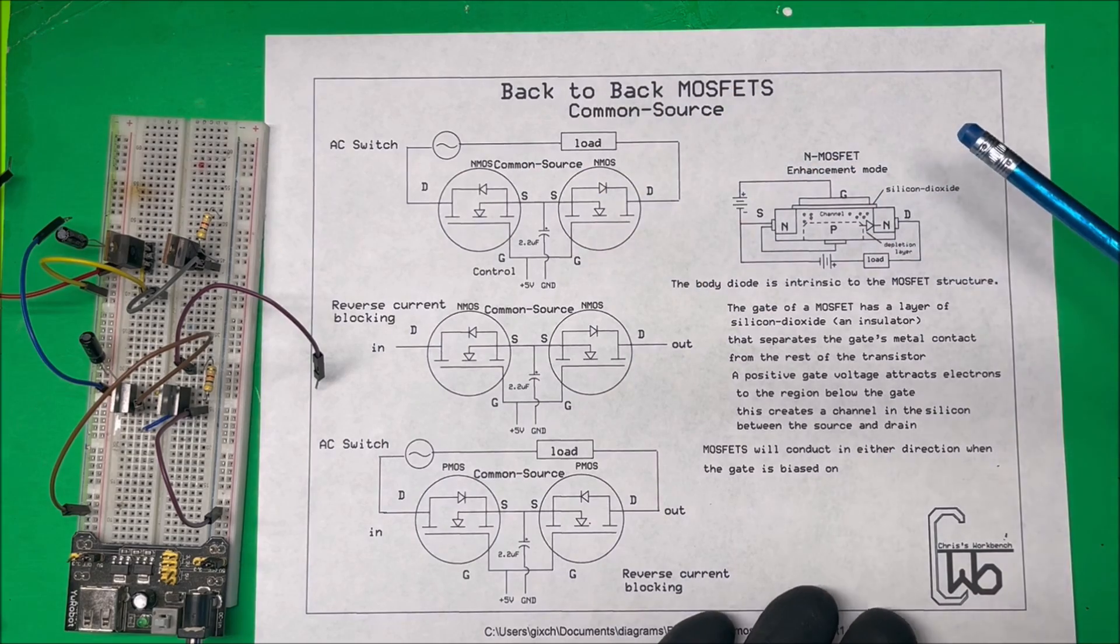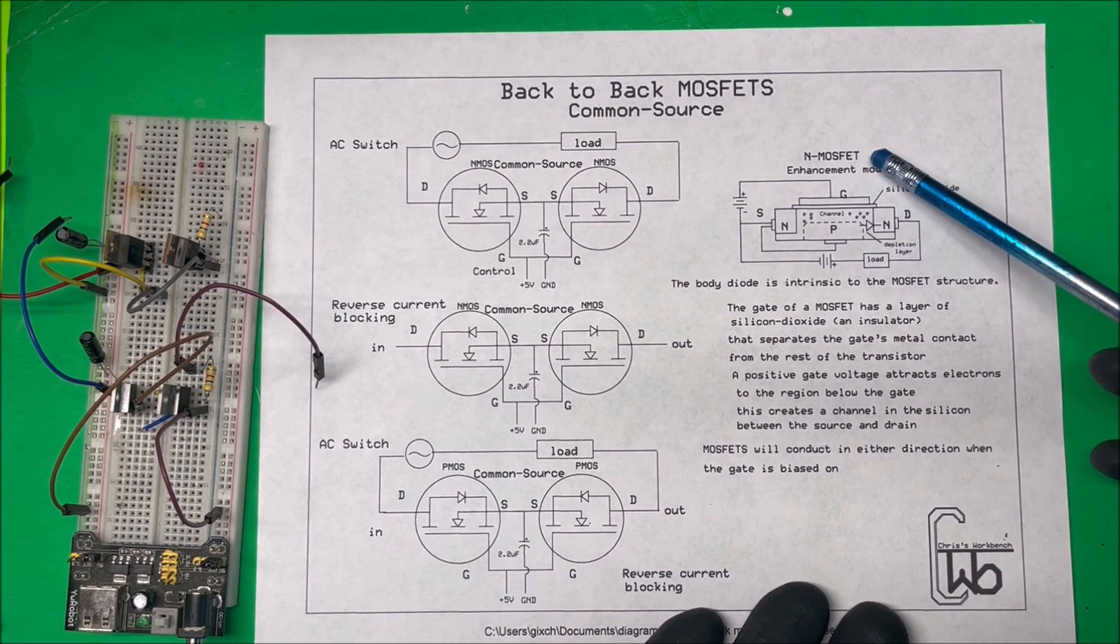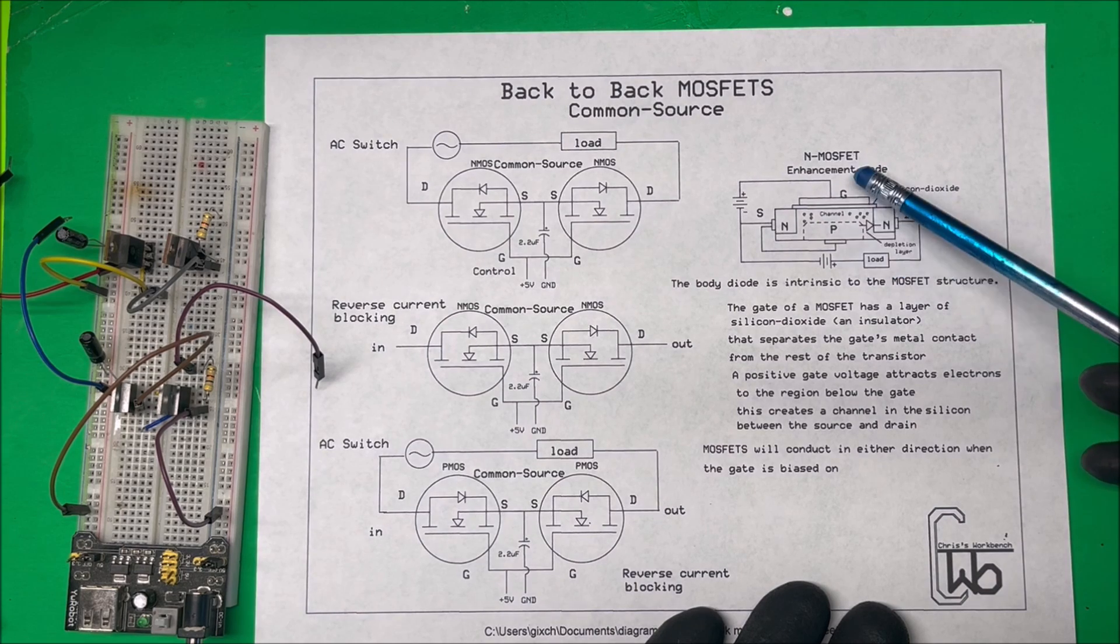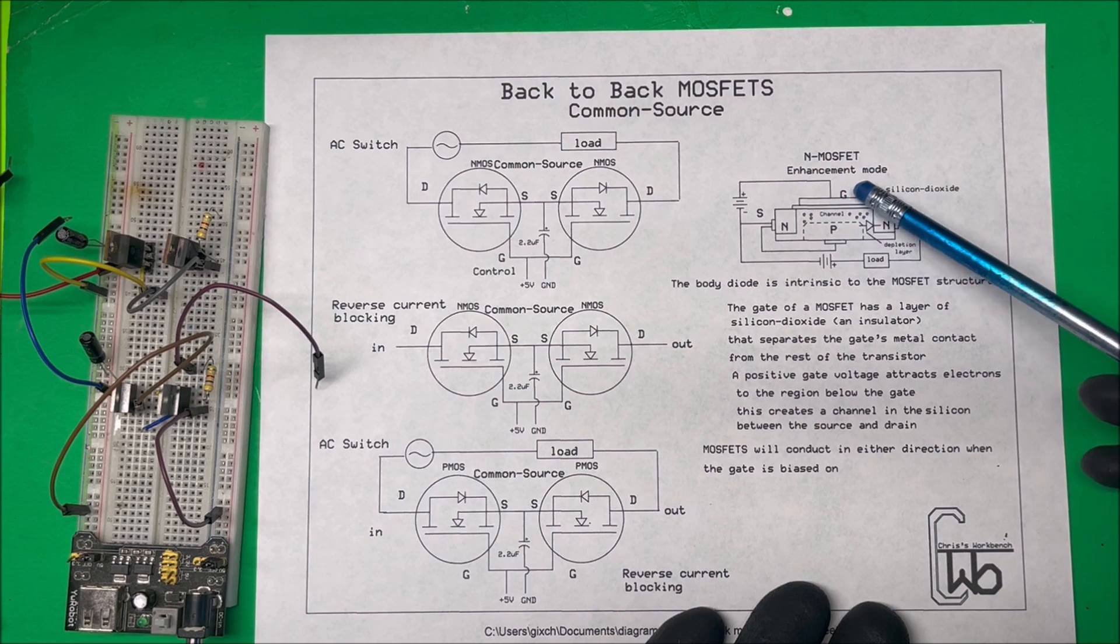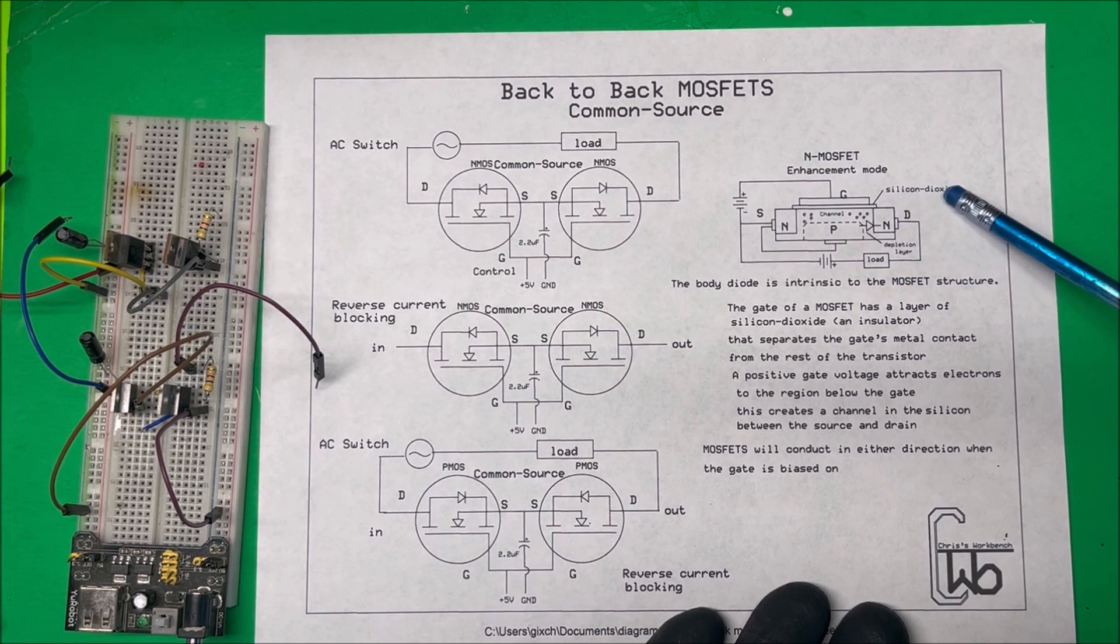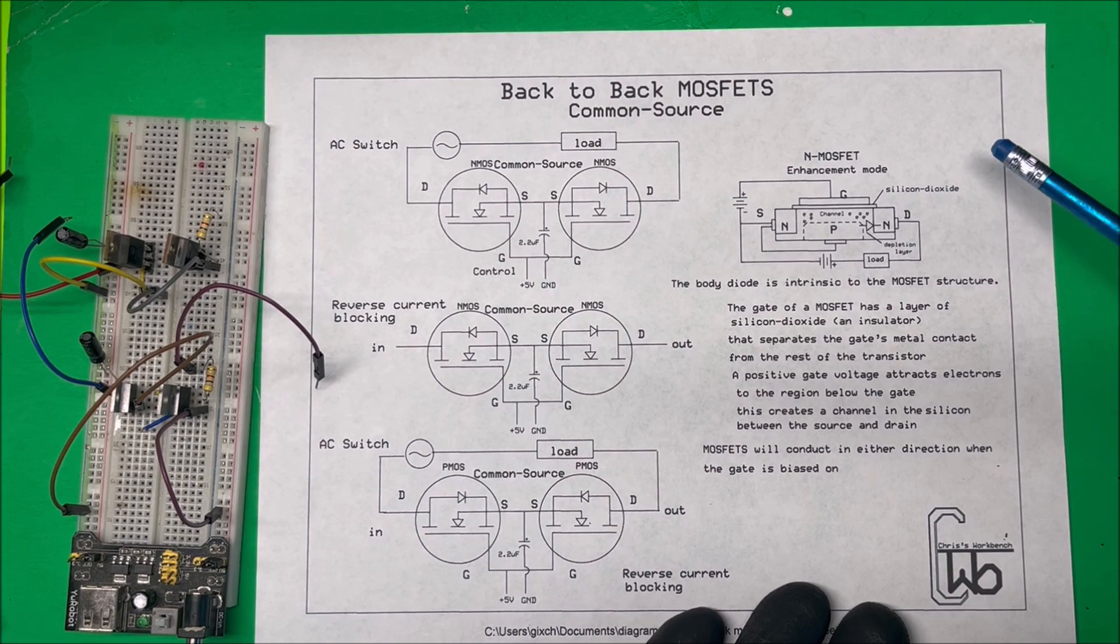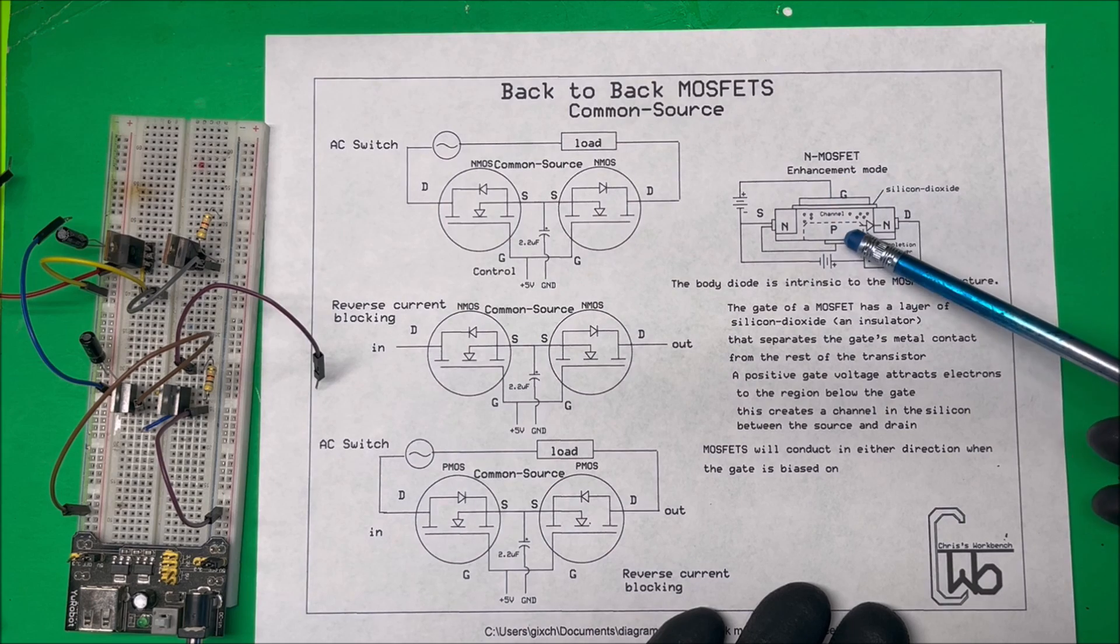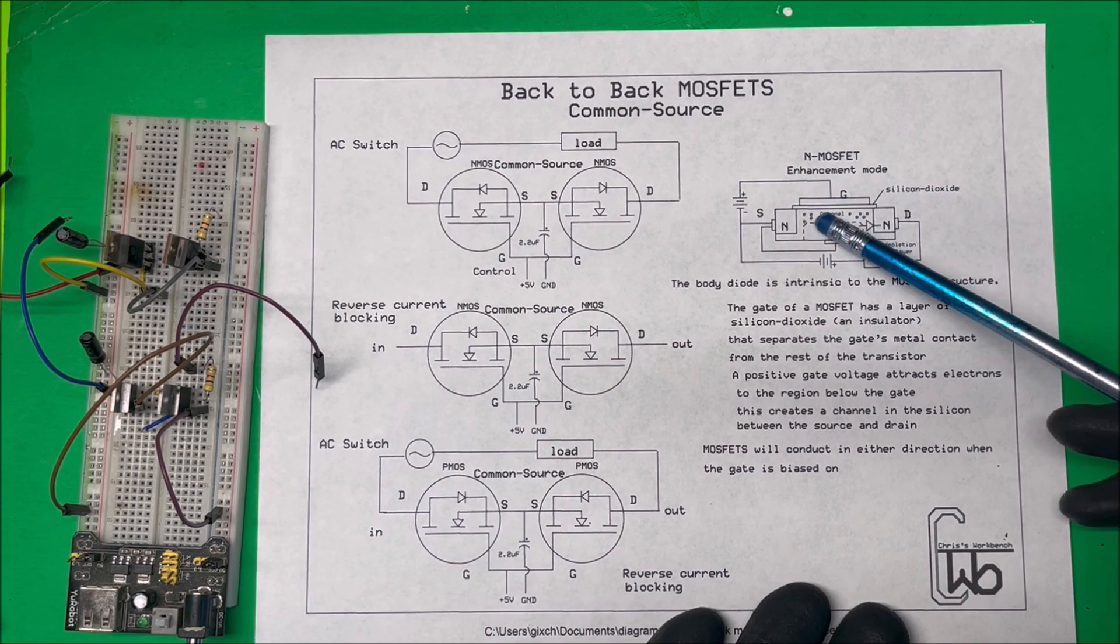Now this is a representation of an n-channel MOSFET enhancement mode, what it looks like inside. We have our gate up here with a metal plate, and in between that and the main body of the transistor we have silicon dioxide which acts as an insulator. We put positive up here to bias it on, and we need a negative on this p-material down here.